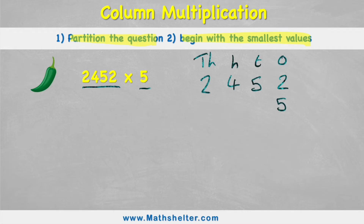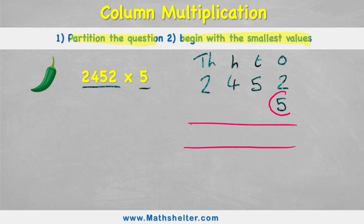My tips are: first, partition the question and then begin with the smallest value. Because 2,452 times five is quite hard to work out in one go, I need to do it in sections. Let's get ready by putting my equals line, and I'm going to be starting with this smallest value here, which is my five in the ones column.